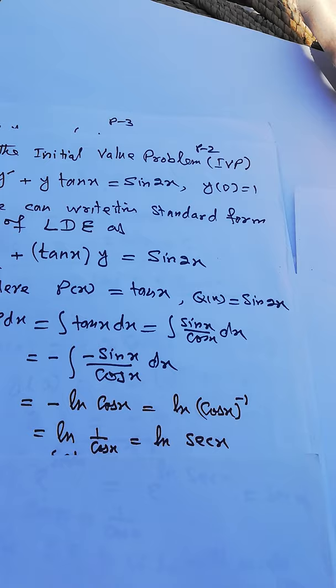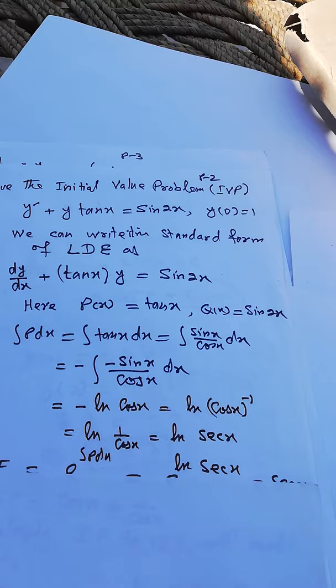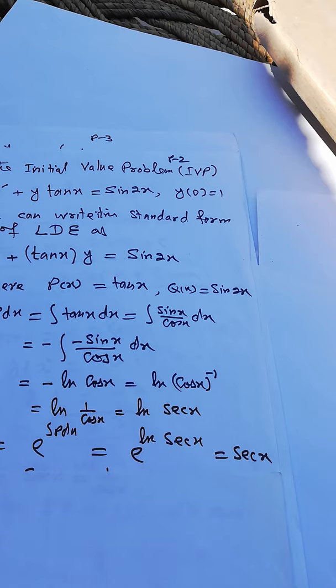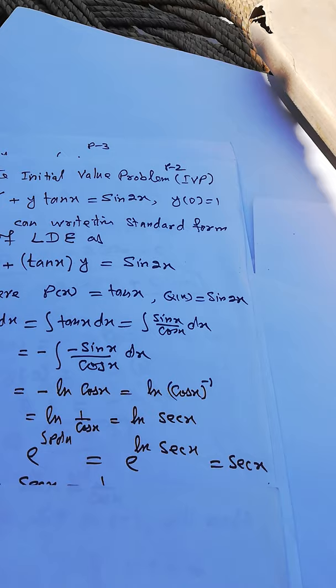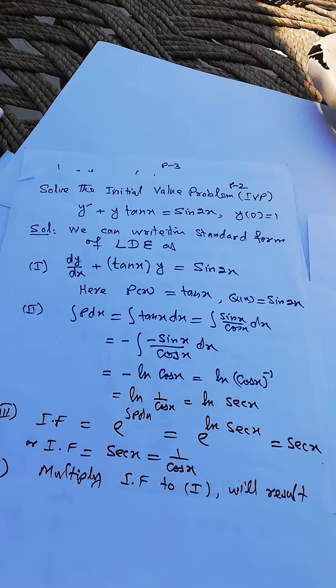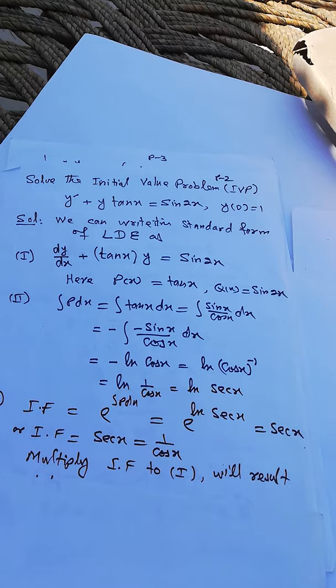The next step is to find the integrating factor, which is e raised to the integral of P dx. That gives e raised to ln(sec x). Since the exponential and natural log cancel each other, the integrating factor is simply sec x.